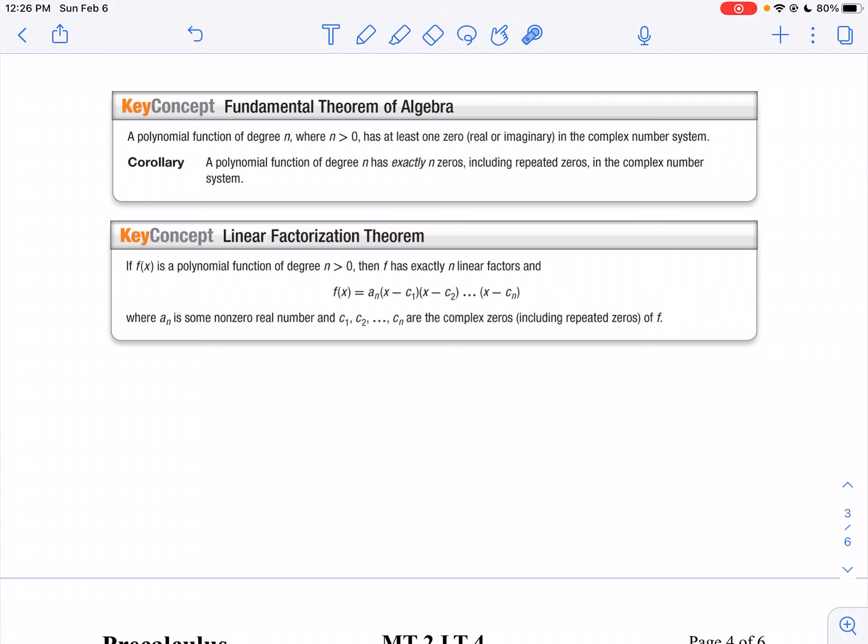So if I have something to the fifth power, that means I want to have five solutions if I've got some double roots in there. You might not have five different ones, but you have a total of five answers. Now I could rewrite them in linear form by subtracting each of the roots and multiplying by some coefficient.